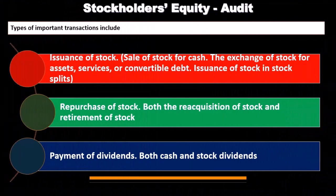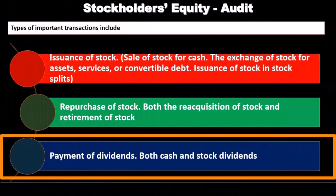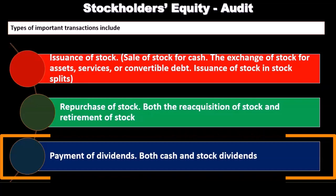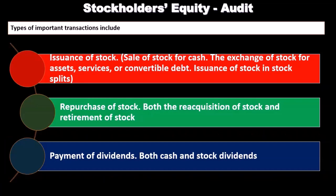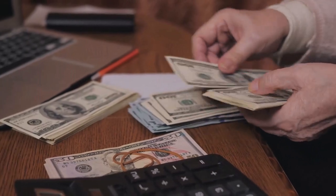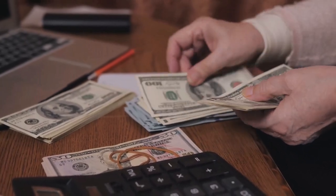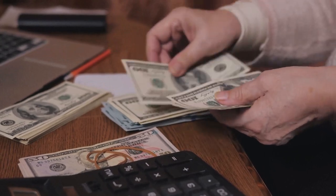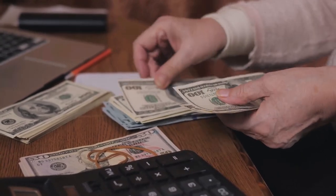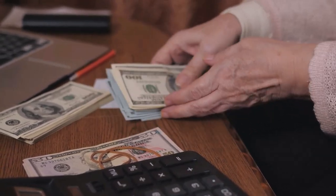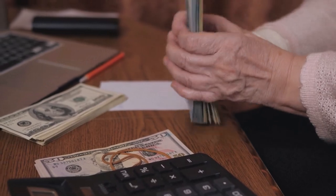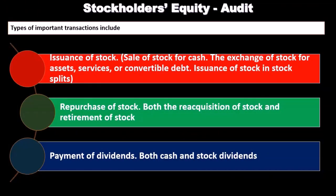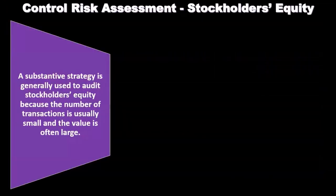The payment of dividends — both cash and stock dividends — is something we want to consider in relation to stockholders' equity. Dividend payments are similar to a draw for a sole proprietor, representing a return of earnings. Cash dividends are a more straightforward thing to audit, while stock dividends are going to be a little more complex to audit.